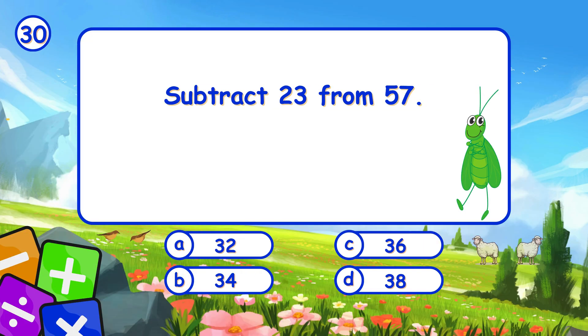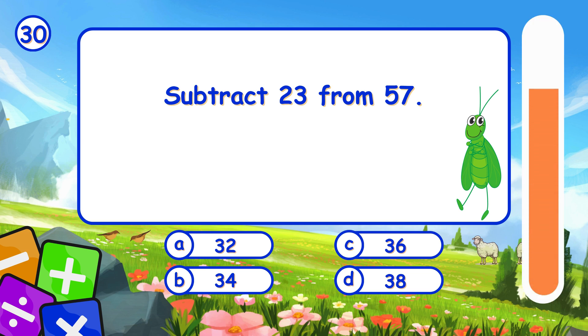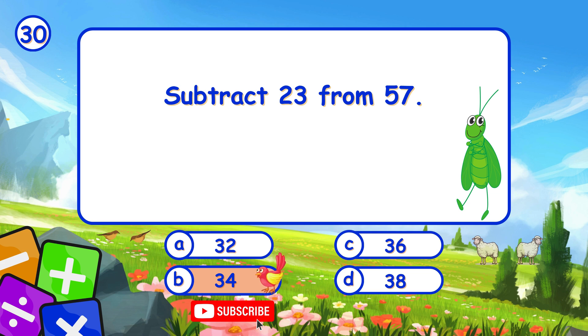Subtract 23 from 57. It's B, 34. Subtracting 23 from 57 leaves 34.